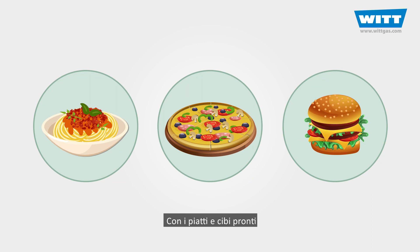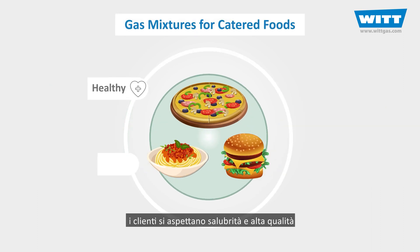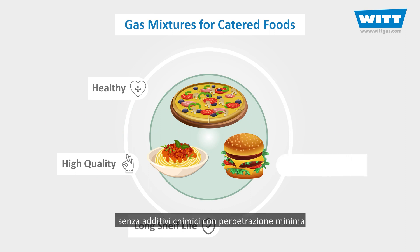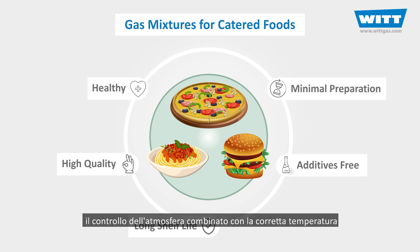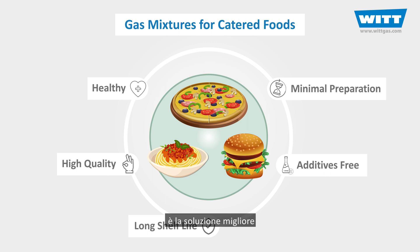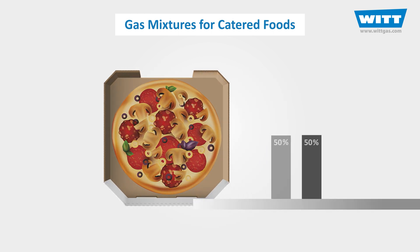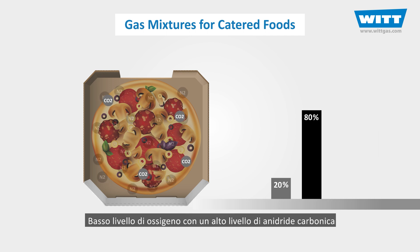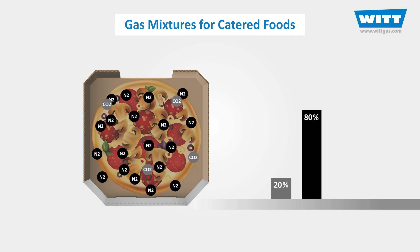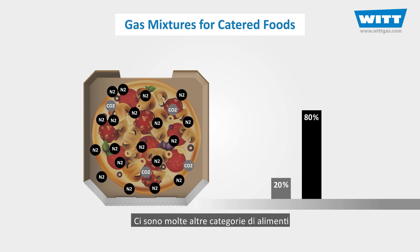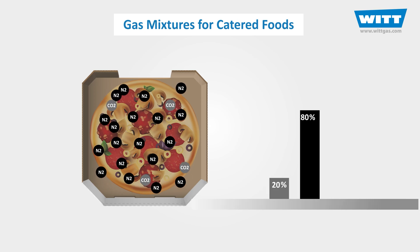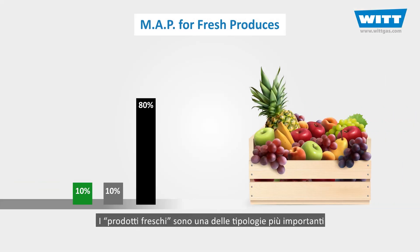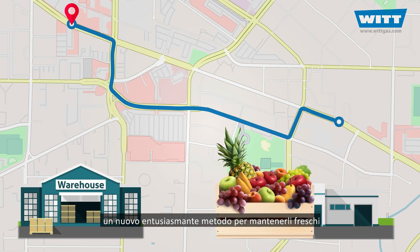With ready meals and catered foods, customers expect healthiness and high quality with long shelf life, without chemical additives and with minimal preparation. In order to meet these demands, atmosphere control combined with the correct temperature is the best solution. Low oxygen levels with a high level of carbon dioxide will promote such product shelf life. Fresh produce is one of the most important food categories, and another video will demonstrate a new exciting method for keeping them fresh during transport.